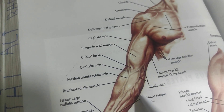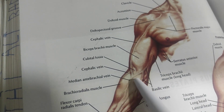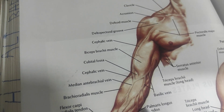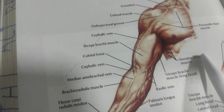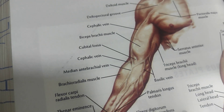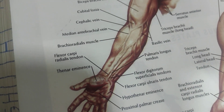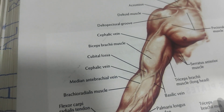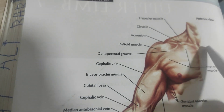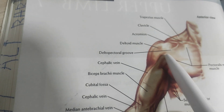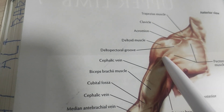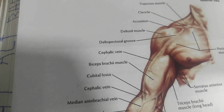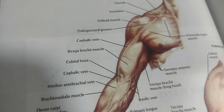For venous supply we have the cephalic vein, basilic vein, and median antebrachial veins. For arterial supply we have the radial artery, ulnar artery, and brachial artery, and from the mid-clavicular region we have the axillary artery.